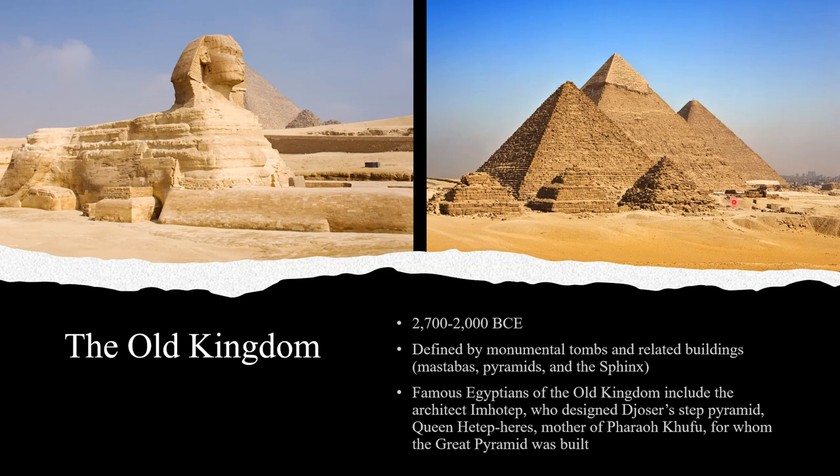Famous Egyptians of the Old Kingdom include the architect Imhotep, who designed Djoser's Step Pyramid. Queen Hetepheres, mother of the pharaoh Khufu, for whom the Great Pyramid was built, is also notable. Archaeologists think that Queen Hetepheres may have been one of the first Egyptians to be artificially mummified. Although her body has not been found, they have found canopic jars containing her organs, suggesting there was an attempt to artificially preserve her remains.